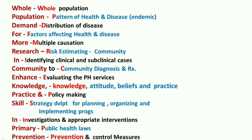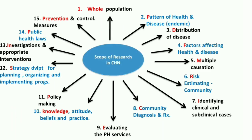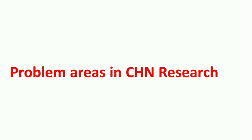Primary stands for public health laws — the scope of research in community nursing helps promote, implement, and amend new public health laws based on identified problems. Prevention means research also helps identify preventive problems, and based on that, we can prepare preventive and control measures to prevent and control problems in the community. You can use the diagram to explain these in detail.